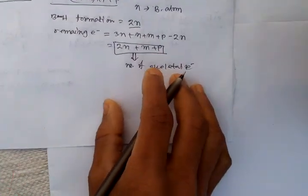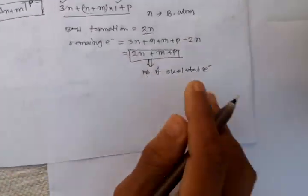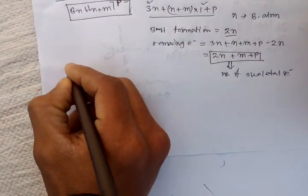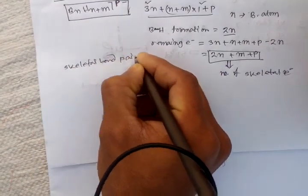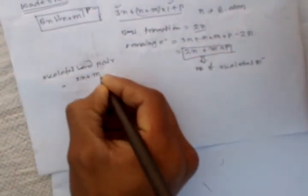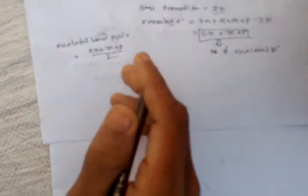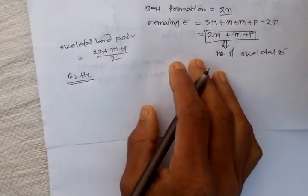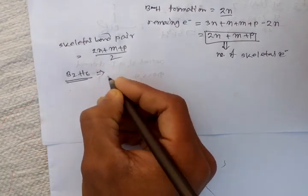Once we find out the number of skeletal electrons, we can also find the skeletal bond pairs. The skeletal bond pair equals (2n + m + p) divided by 2.